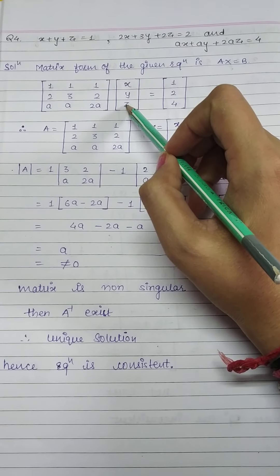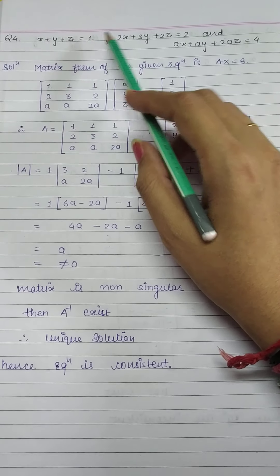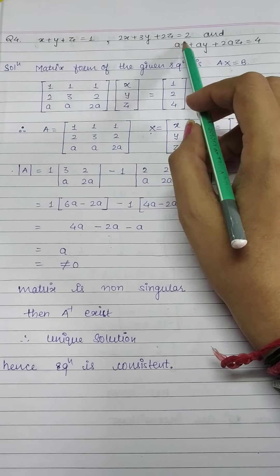Hello student, now the question number 4. Same as it is, we have to find that the given system is consistent or inconsistent, right?